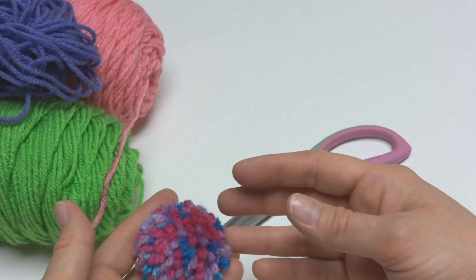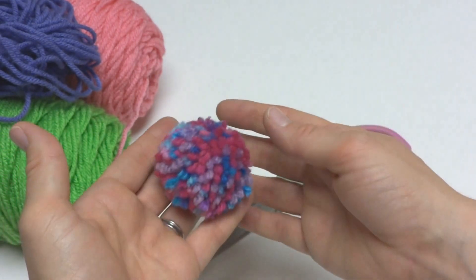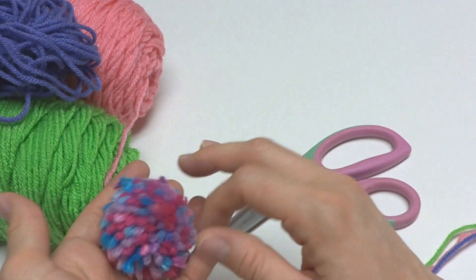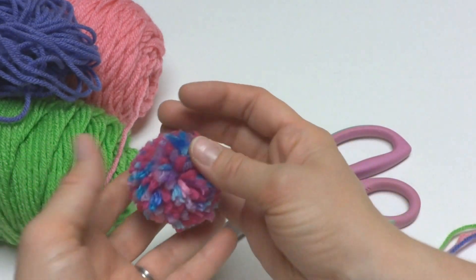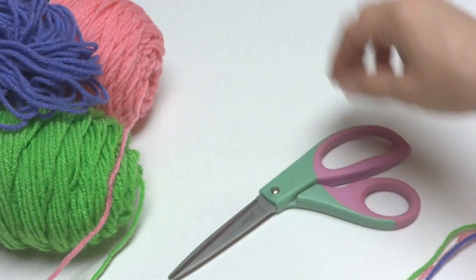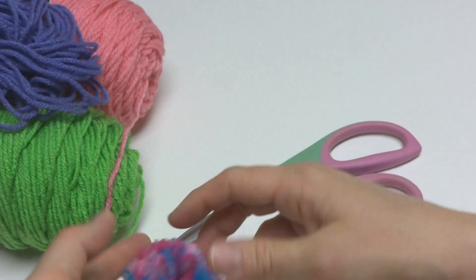Hi everyone, it's Jennifer from Fiberflux. In this video I will show you how to make a multi-color pom-pom. This is fun and easy to make. You don't need any fancy tools. You just need a bunch of colors of yarn, a pair of scissors, and your hands.